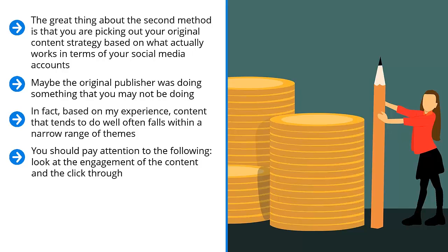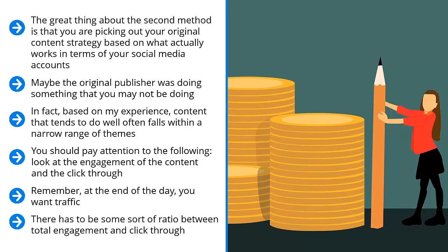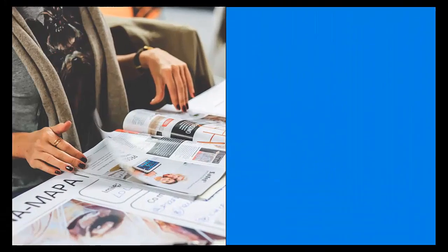You should pay a lot of attention to the following: look at the engagement of the content and the click-through. A lot of social media marketers drop the ball at this point — they think that it's all about engagement. Regardless of how many likes, shares, or comments a piece of content gets, if people don't click through, those engagement signals are not worth much. Remember, at the end of the day, you want traffic. Getting caught up in how many shares, likes, or comments you get is not going to do you any good. You have to always pay attention to the click-through. There has to be some sort of ratio between total engagement and click-through. The higher the ratio of the click-through, the more attention you should devote to a piece of content.